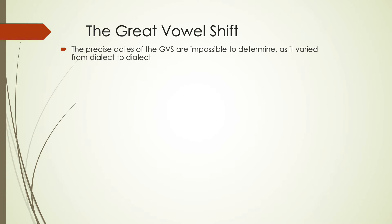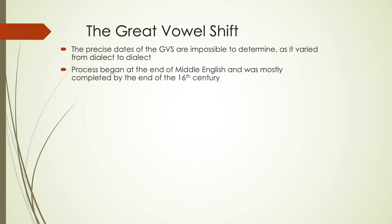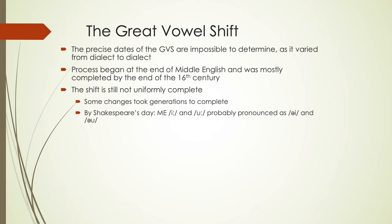The dates for these changes are not entirely certain — it's impossible to completely determine because it would have varied from dialect to dialect. It would have started earlier in southern areas and taken longer to reach northern areas. It's seen as beginning around the end of the Middle English period and was mostly completed by the end of the 16th century, though some 17th century texts are still in flux. Some of these changes took generations to complete.